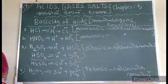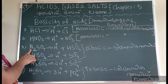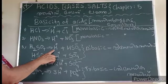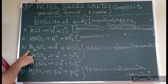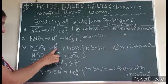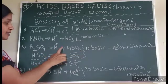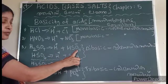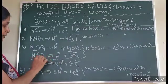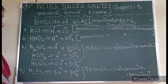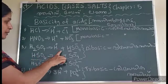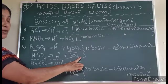Sulfuric acid (H2SO4) produces two H+ ions. In the first ionization, H2SO4 gives H+ and bisulfate ion (HSO4−). In the second ionization, the bisulfate ion gives another H+ and sulfate ion (SO4²−). So sulfuric acid is called a dibasic acid.